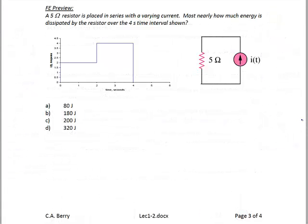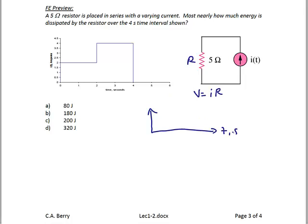Now let's look at an example from the FE review manual that addresses voltage, current, power, energy, and resistance. A 5-ohm resistor is placed in series with a variant current given by a waveform. The question asks how much energy is dissipated by the resistor over the 4-second time interval shown. The first thing we do is find voltage given current and resistance using Ohm's law: voltage equals current times resistance. Since the resistance is 5 ohms, we create a rough sketch of the voltage waveform.